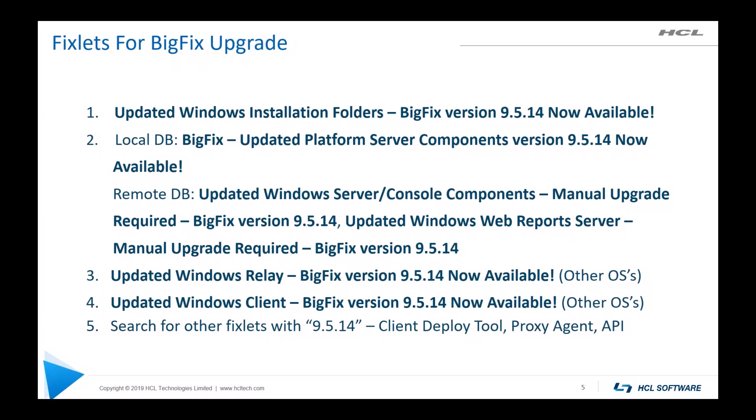Here are a list of fixlets for the upgrade in order. First, you will need to update the Windows installation folders. Any endpoint that shows relevant to this first fixlet would have outdated BigFix installers. It is recommended that you upgrade these installation folders so that you can install BigFix 9.5.14 components, and all further installations of the BigFix server, client, and consoles will be the latest version. Next, for number two, you will have one fixlet to upgrade platform server components if you have a local database.